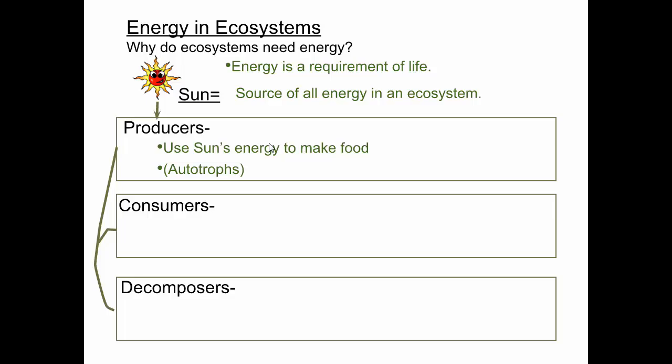Only organisms with chloroplasts and chlorophyll can actually use the sun's energy to make glucose. All other living things are what we call consumers — they get their energy by eating other organisms and can't make their own food. All animals are consumers, fungi are consumers, and most bacteria are consumers. The other term for a consumer is heterotroph — 'hetero' means other, so they have to eat other things for food.